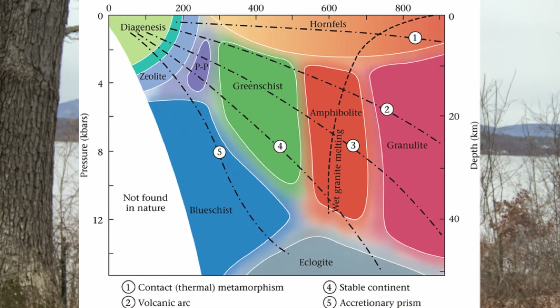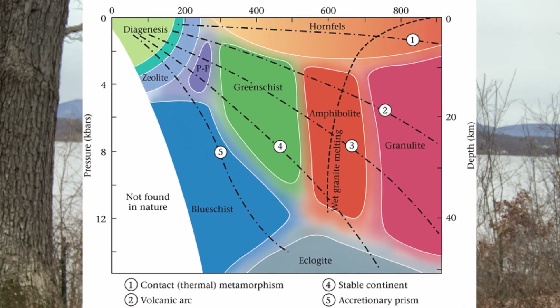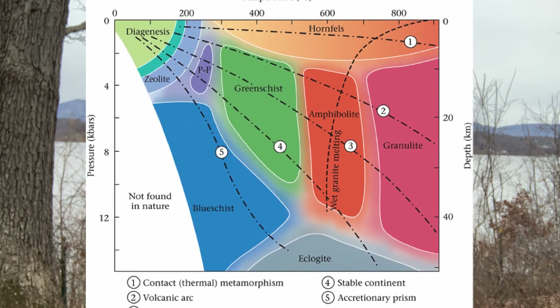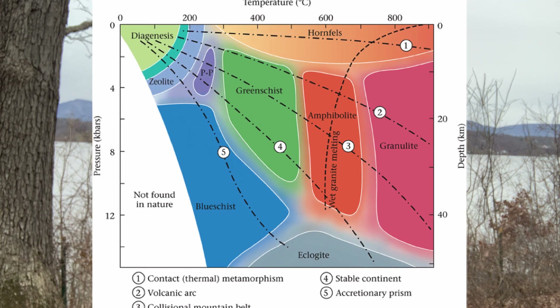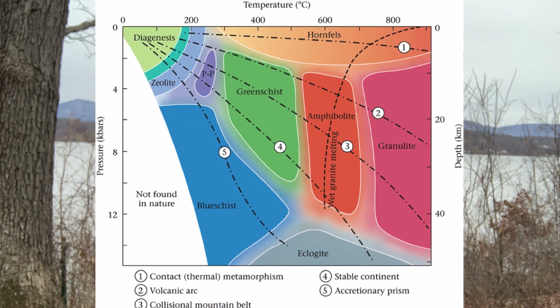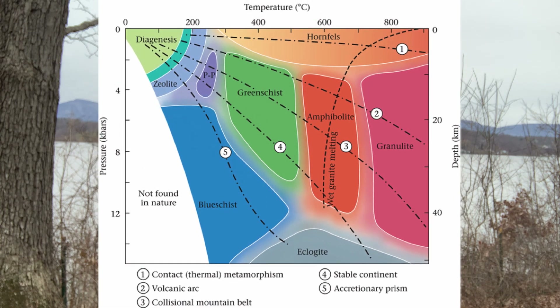Pretty much any rock can go through metamorphism. There are also different levels of metamorphism, so the higher the pressure and the heat, the more intense those changes are. But what happens when that rock is melted and turned into magma?